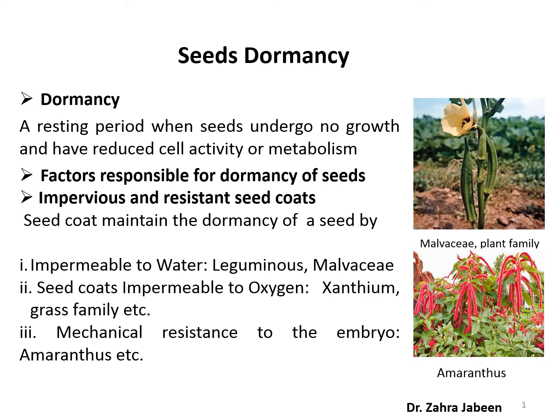Let's discuss the dormancy of seeds. Most seeds when separated or shed from the parent plants are very dry — about 10% of their weight is water. In this condition, all the chemical processes are very slow and little food is used. In this dry condition, the seeds may remain alive but dormant for long periods without germinating. During the dormant condition, the seeds consume oxygen and release carbon dioxide.